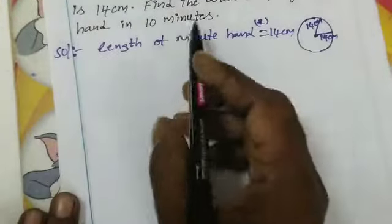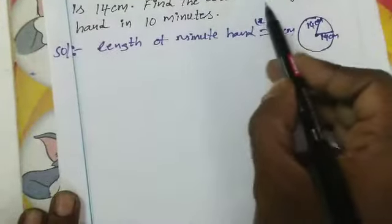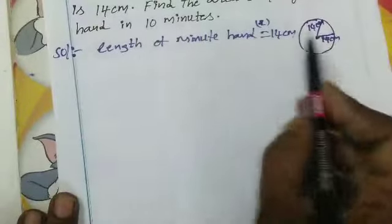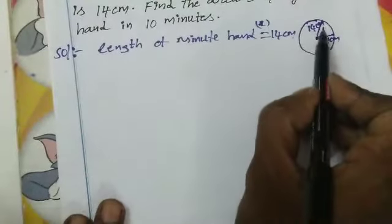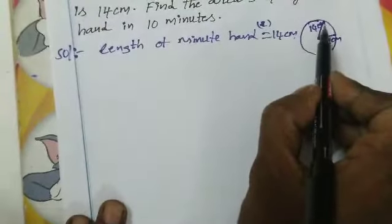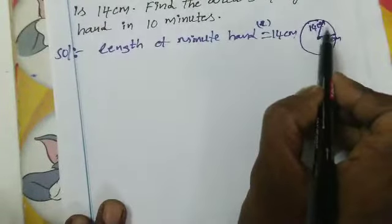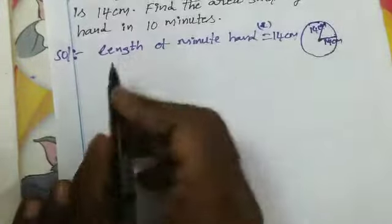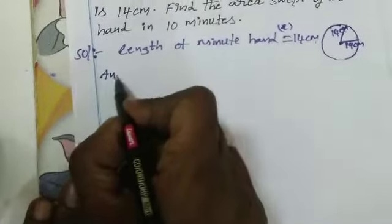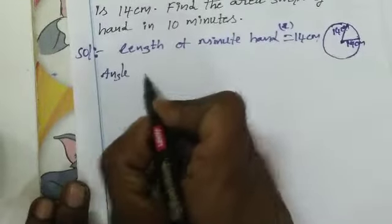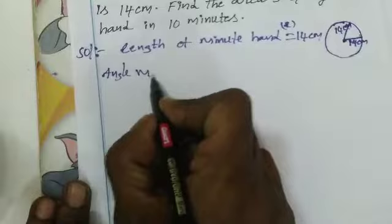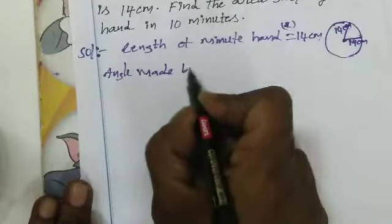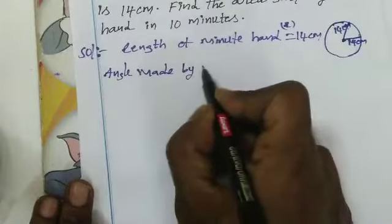Find the area swept by the minute hand in 10 minutes. First of all, we find the angle made by the minute hand.